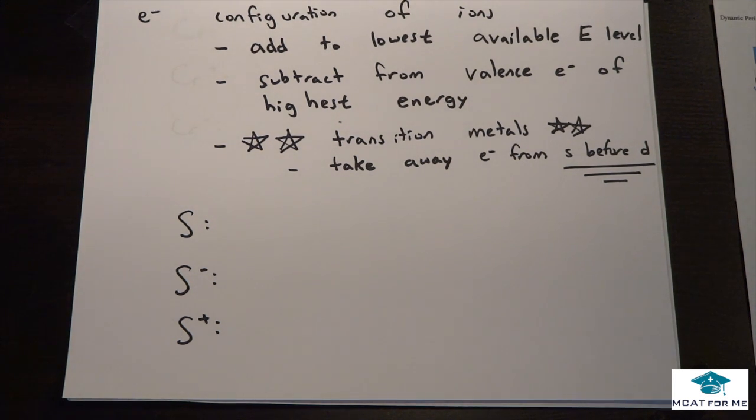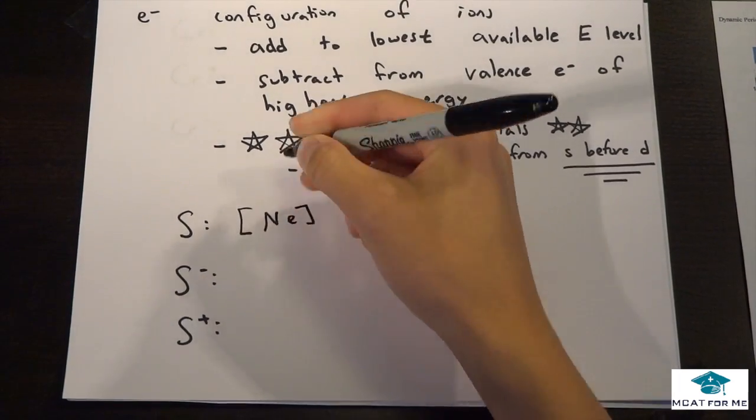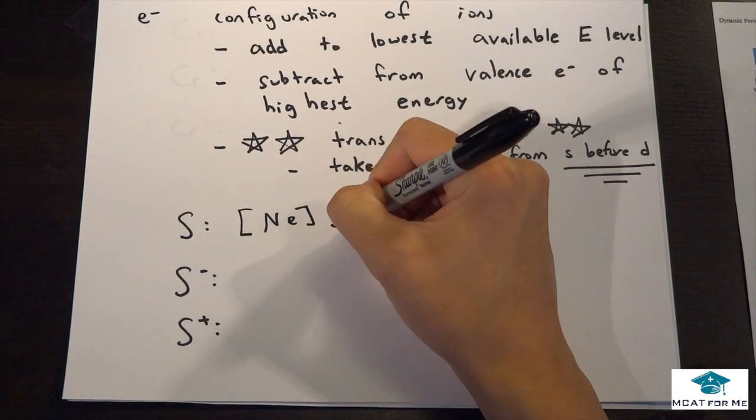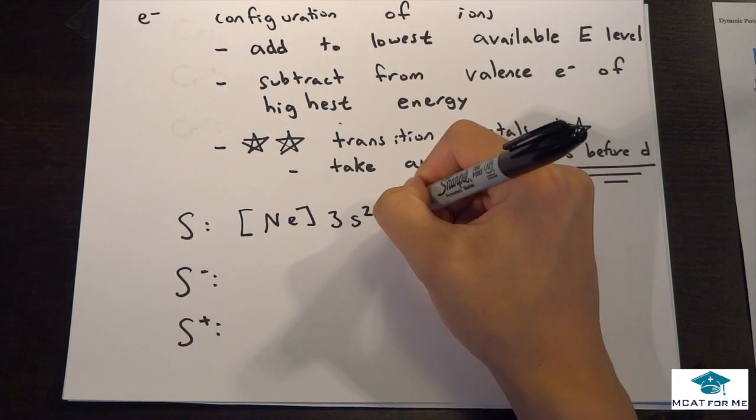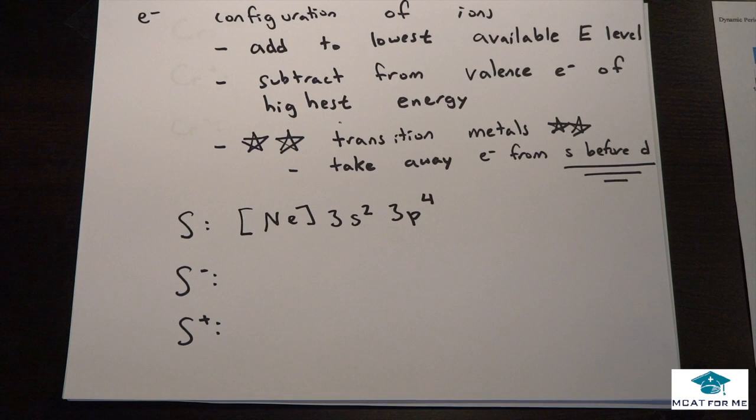That's kind of weird because the 3d energy level is higher than the 4s, but for some reason we take off the s before the d. We'll see that in a couple of examples. Sulfur would be [Ne] 3s² 3p⁴, right?